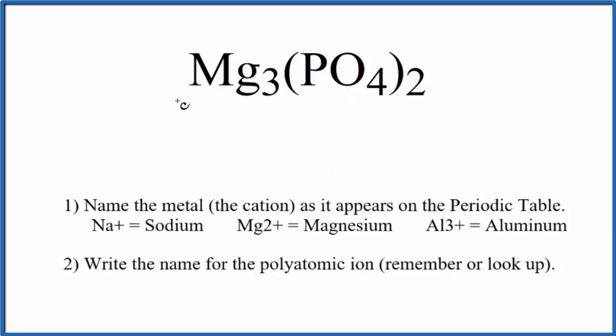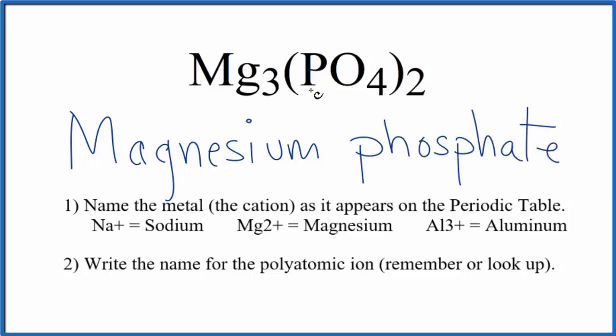First, we write the name of the metal, the Mg. That's magnesium. Then, we're going to write the name for the polyatomic ion. That's this PO₄, the phosphate ion, lowercase p. And the name for Mg₃(PO₄)₂ is magnesium phosphate.